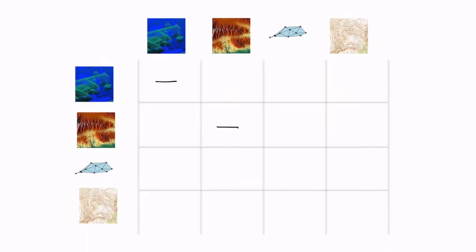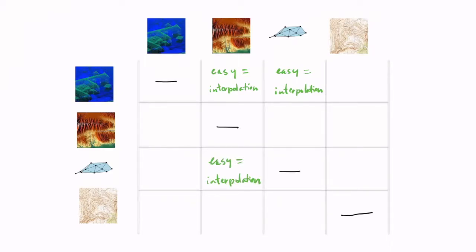With four types, we have in total 12 possible conversions. Some are very easy and have already been covered in previous lessons. For example, going from point clouds to TIN and raster is simply done by interpolation. Going from a grid to a point cloud, you can just keep the center points of every pixel. And going from a TIN to a point cloud, you simply drop all edges and triangles and keep the vertices.